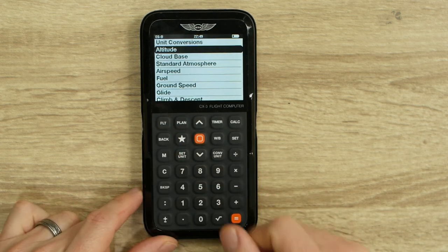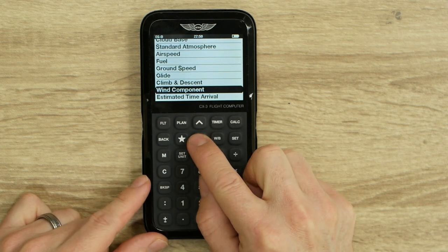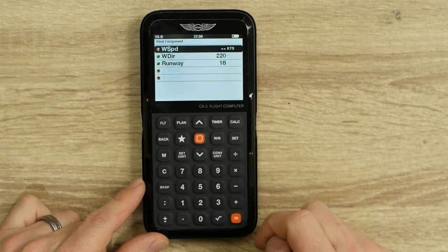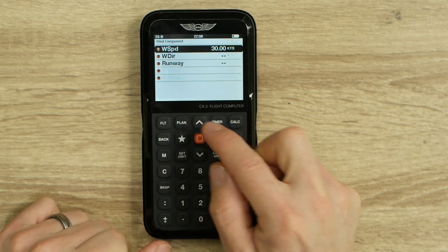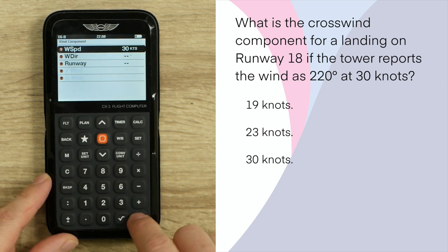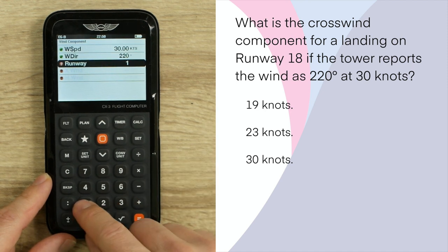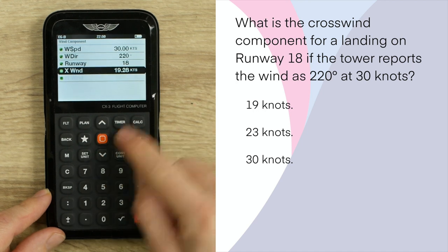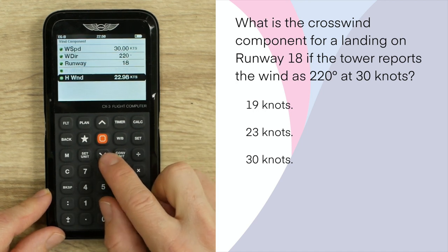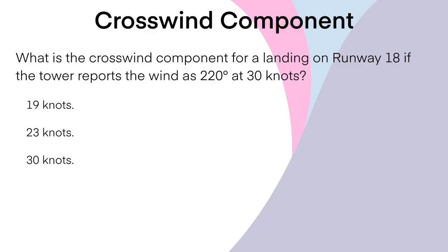Back in FLT mode, I'll scroll down to Wind Component and clear the fields. Wind speed is 30 knots — enter. Wind direction is 220 — enter. Runway is 18 — enter. It gives us a crosswind of 19.28 knots and a headwind of 22 knots. The question asks for the crosswind component, and the answer is 19 knots.